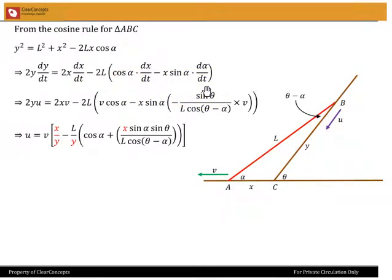And now we found dα/dt in the previous slide using the sine rule, so we're going to substitute it here and we're also going to replace dx/dt with V. We get 2y dy/dt with U, so 2yU equals 2xV - 2LV cos α - x sin α into -sin θ/(L cos(θ - α)) times V.